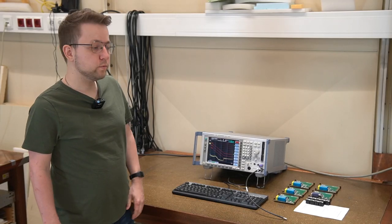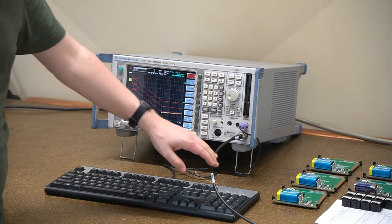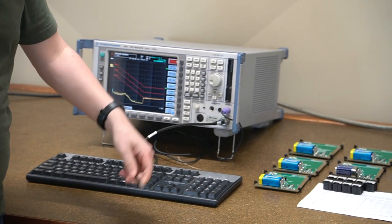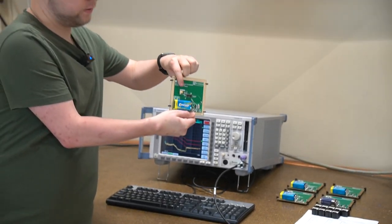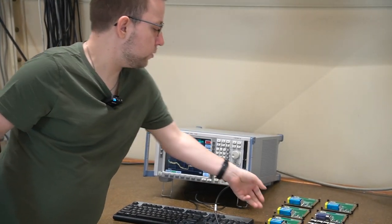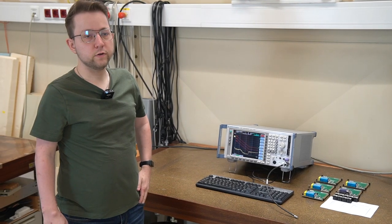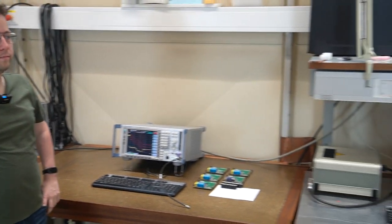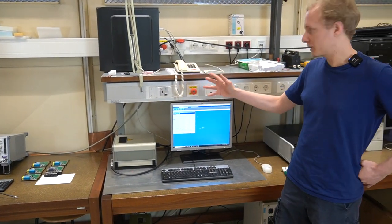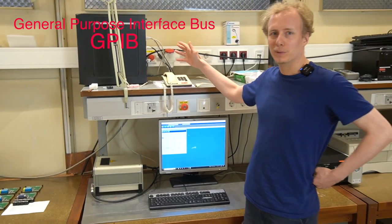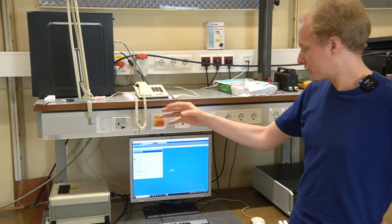So our measurements will be conducted with this EMI receiver. We will connect our PCBs with this cable to our 150 ohm networks with our plug. Then we will take the measurements and from there on out it will be transferred over to our PC. The EMI receiver is connected via a rather old standard which is called GPIB to the PC therefore we have a specialized PC just for that instrument.